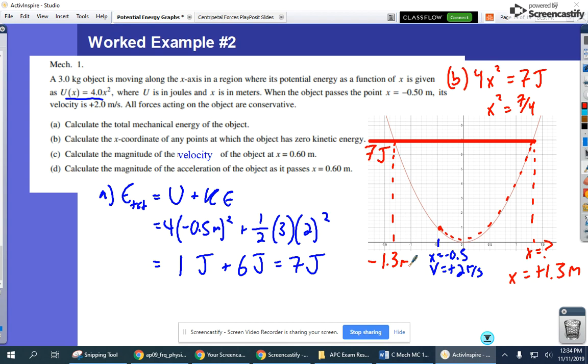For part C, I would actually like you to do this, to calculate the velocity of the object when it's at 0.6 meters. I would like you to calculate the velocity of the object at 0.6 meters. And then part D, calculate the acceleration of the object at 0.6 meters. And remember, if they want the acceleration, it's force over mass. And if you want the force, it's negative dU/dx. So why don't you try those, and we'll see how those work out. Thank you very much.